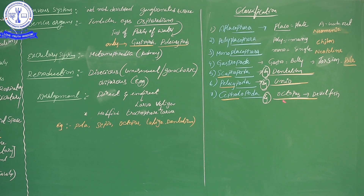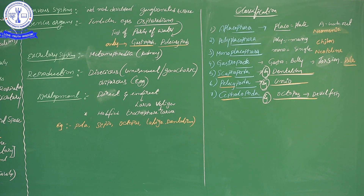In summary, for Phylum Mollusca, you should remember: radula, osphradium, and torsion as the key special characteristics. These exceptional characteristics are very important for examinations. What characteristics are unique to which phylum — those special or exceptional features are very important.